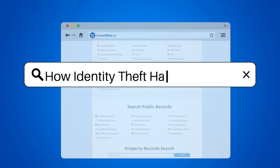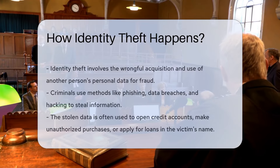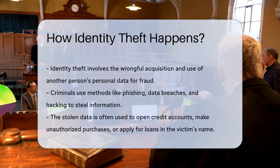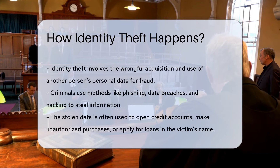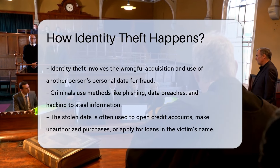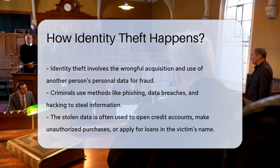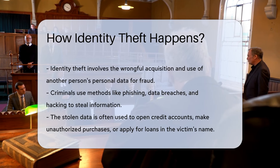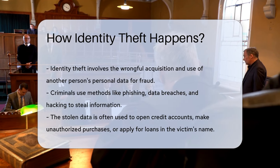How identity theft happens. Identity theft occurs when someone wrongfully obtains and uses another person's personal data for fraudulent purposes. Criminals often steal information through methods like phishing emails, data breaches, or hacking into vulnerable systems.